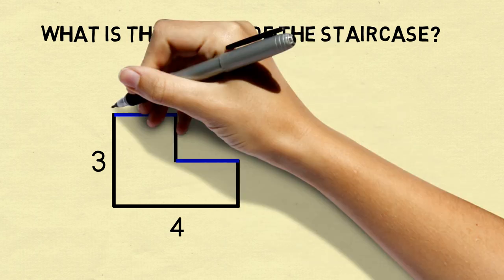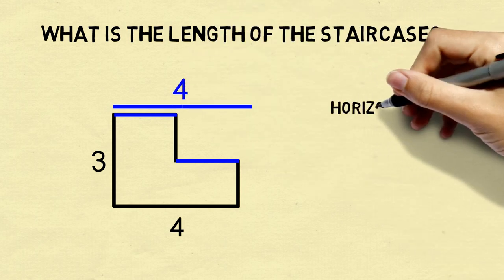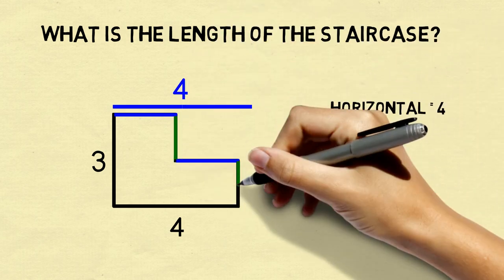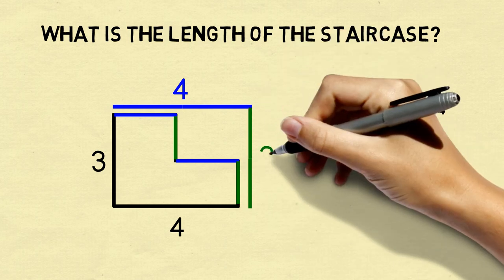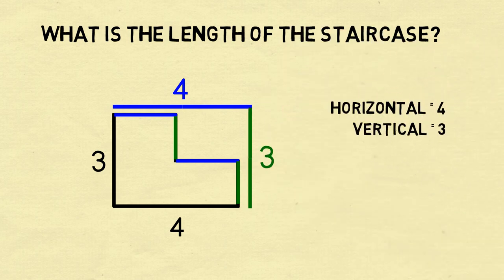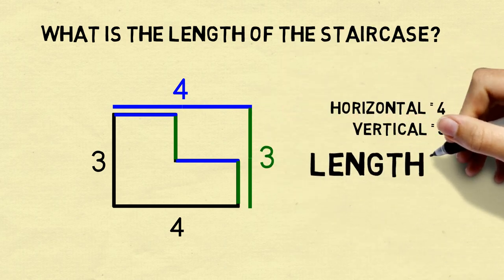We can solve this problem by breaking it down into its horizontal distance of 4 and its vertical distance of 3. Clearly, the total length of the staircase is the sum, which is 7.